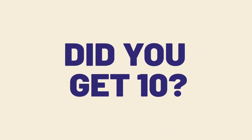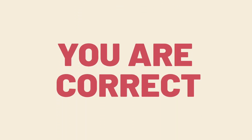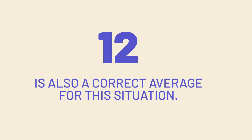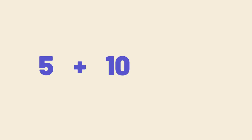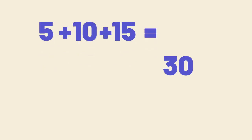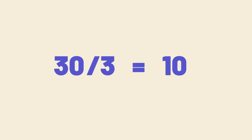You might have said 10. If you said 10, you're correct. Your response also reflects a specific social power structure in which you imagined the average from the perspective of the teachers. In the first example, we imagined the three classrooms from a single perspective each: five students plus 10 students plus 15 students, which amounted to 30, divided by three perspectives. This gives us the average classroom size from the teacher's point of view.